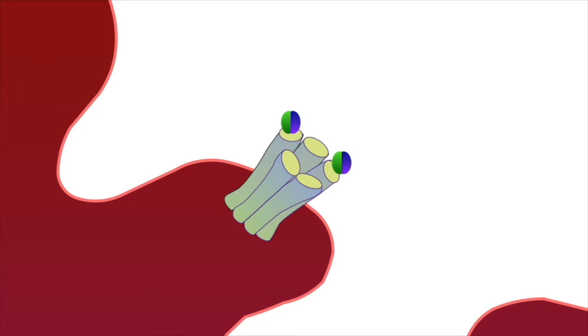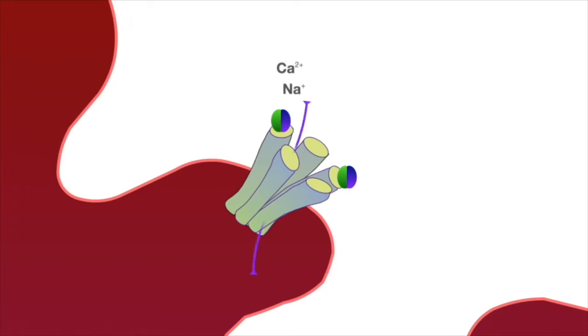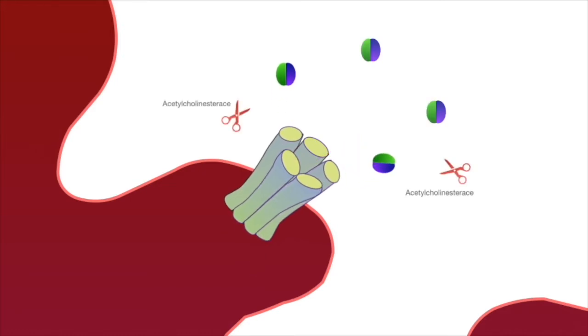Now the receptor sites are free. Fresh acetylcholine tends to occupy the receptor sites, and again when both sites are occupied, conformational change occurs. Now again the channel is open, depolarization happens due to cation transport. Acetylcholine then dissociates from the receptor, and then cholinesterase enzyme cleaves it. Now acetylcholine and choline moieties are separated.